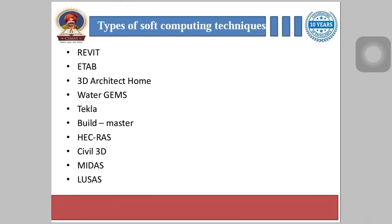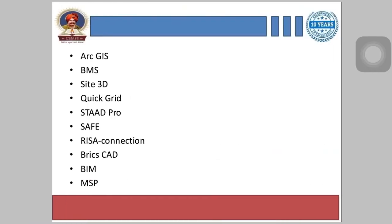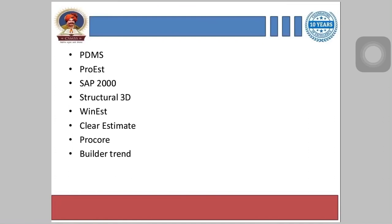Now these are the types of soft computing techniques. The following are various computer software broadly used in civil engineering work and architecture: Revit, ETAP, 3D Architect, Home Water, James Tecla, Build Master, HECRAS, Civil 3D, MIDAS, LUSAS, ArcGIS, BMS, Site 3D, Quick Grid, STAAD Pro, SAFE, RISA Connection.